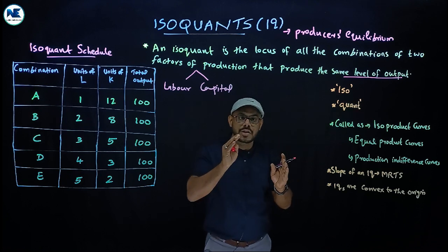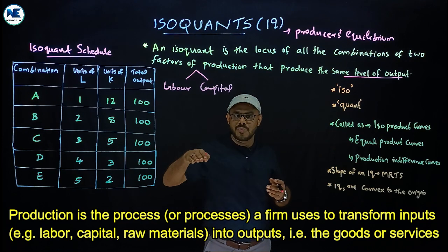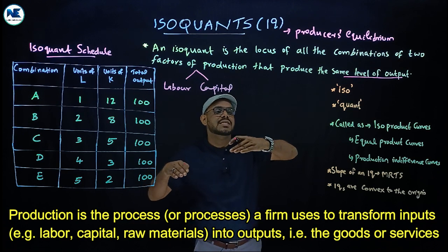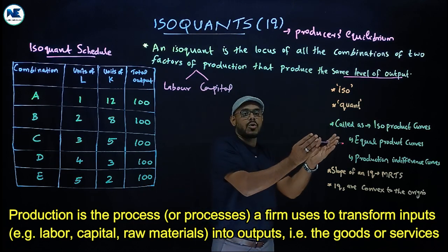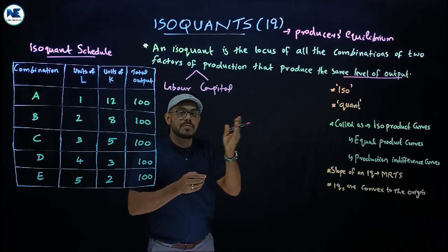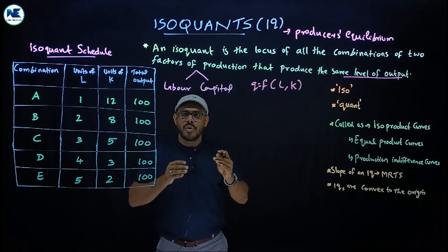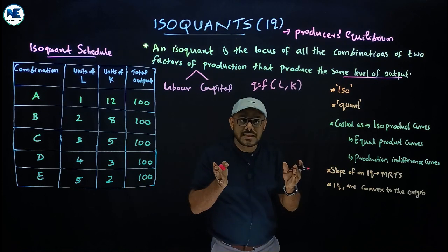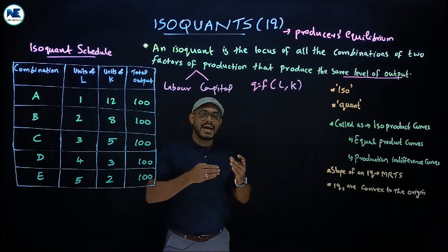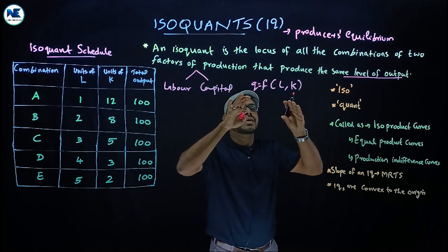Production means the transformation of input into output. Using factors of production, we convert raw materials or inputs into output. The simple production function format is: Q equals function of labor and capital (Q = f(L, K)). All these related topics have been discussed in previous videos, and the links are available in the description box.